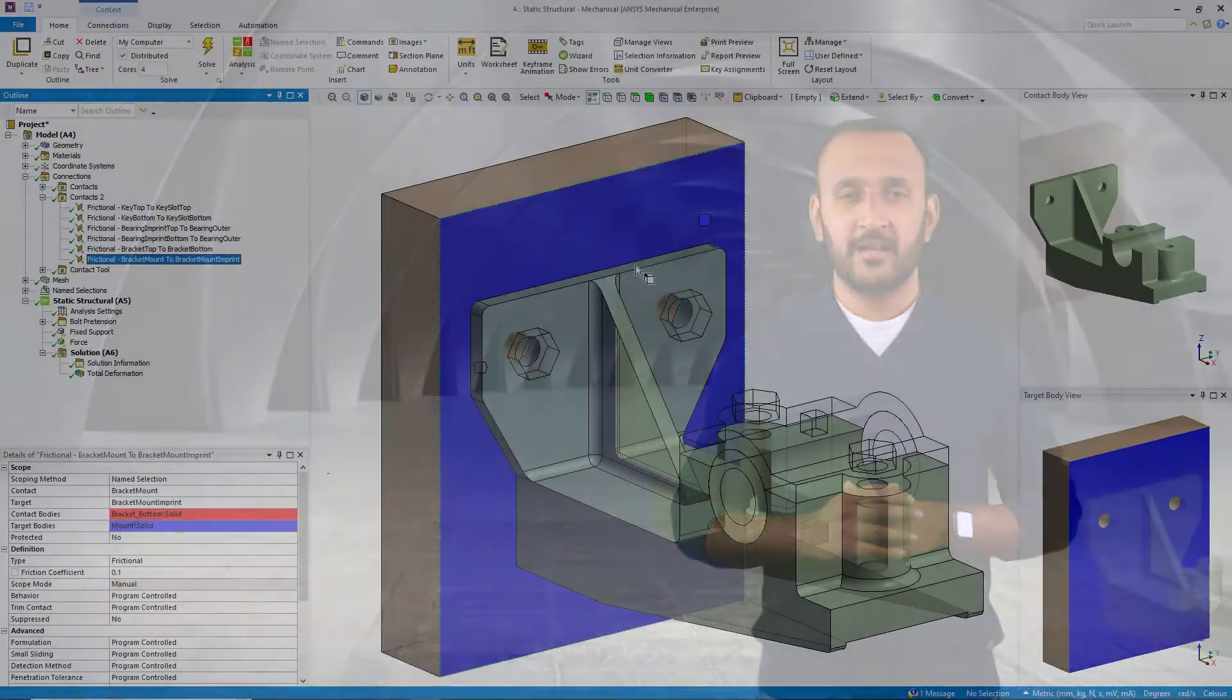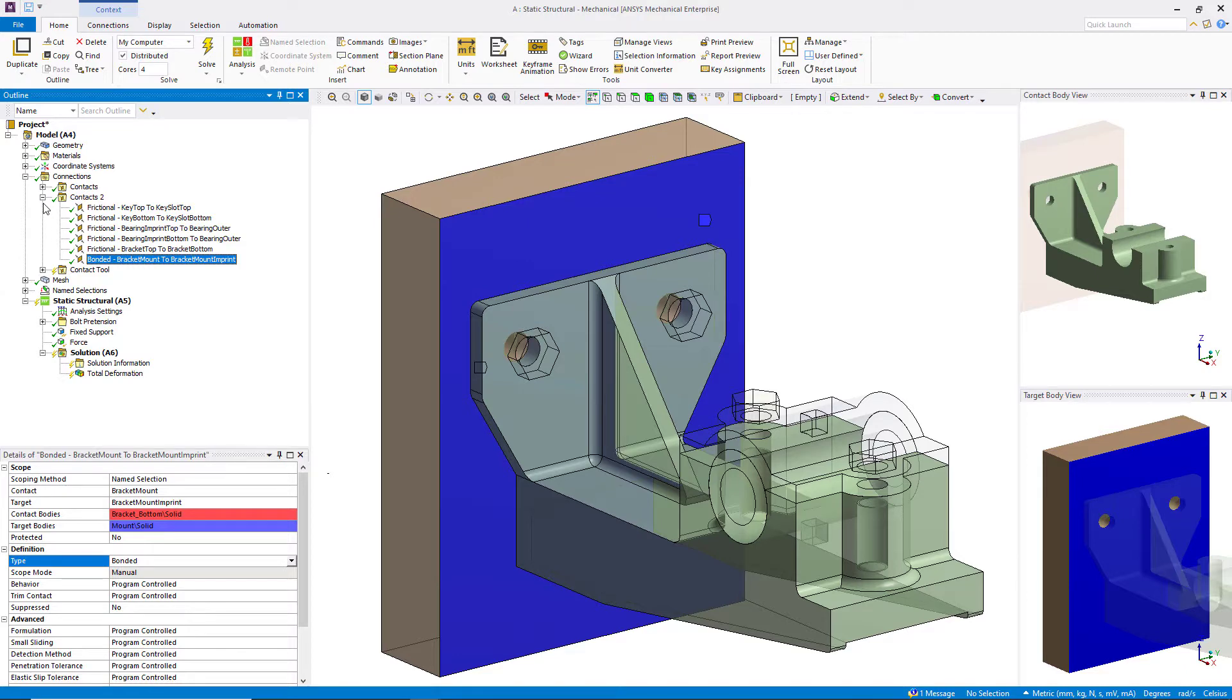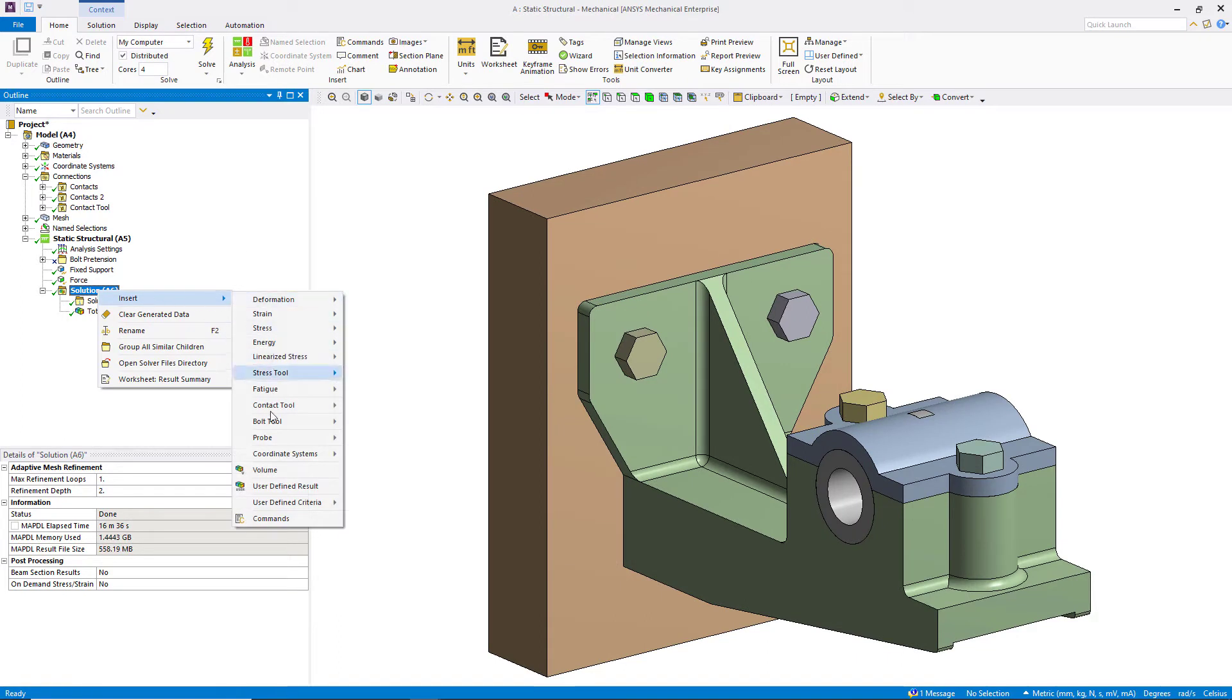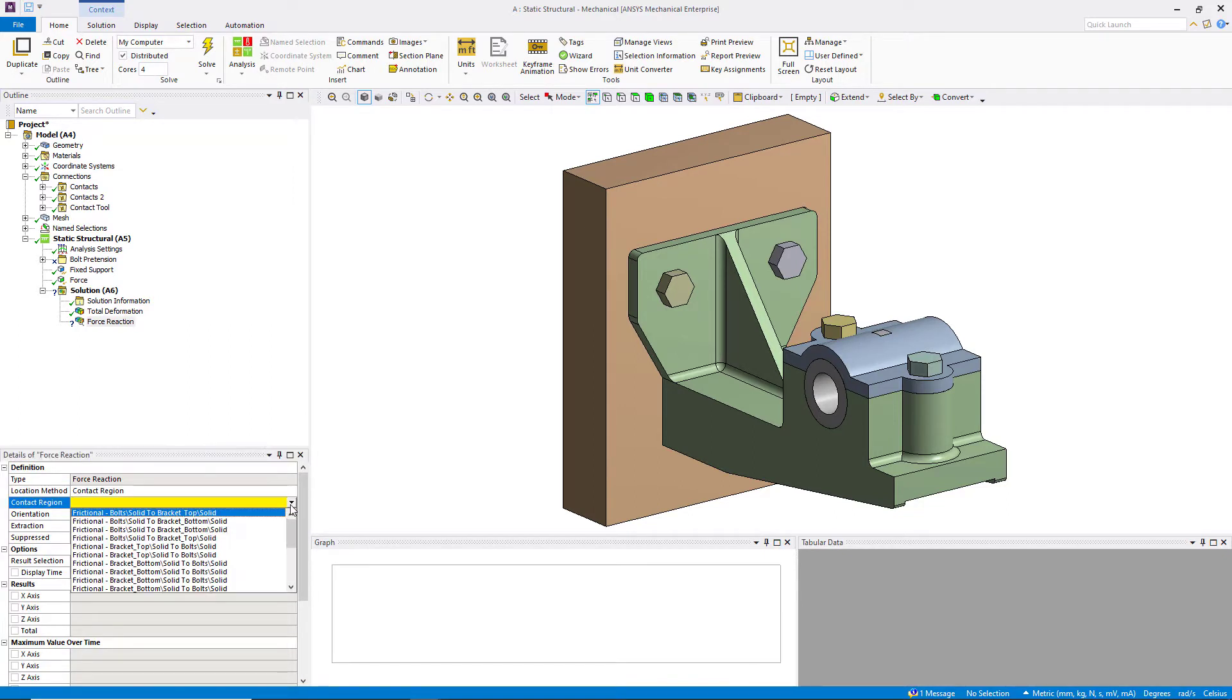Now to understand why force reactions are useful, let's revisit the bracket problem. Replace the contact between the wall and the bracket with the bonded contact as we discussed at the start of the lesson. In this case, when we look at the reaction forces near the contact, we notice that it has a reaction force in the normal direction, meaning that it is supporting the applied external load and these bolts are no longer supporting any load.